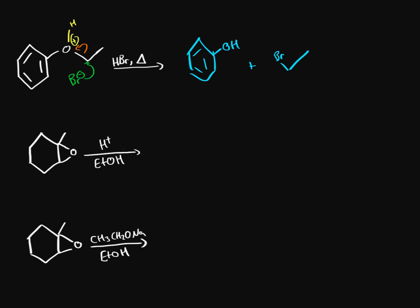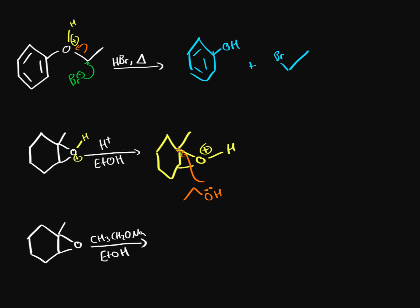Now, for the epoxide with acid, just as the ether oxygen was attracted to the proton, the same scenario applies here — we get a positive charge on the oxygen. With ethanol as the nucleophile, the question is whether it attacks this carbon or the other one. Ethanol is a weak nucleophile, so it's going to attack the more substituted carbon — it's easier for it. The ethanol attacks from the opposite side of where the oxygen is, and this group goes back to the oxygen, so the oxygen no longer has a net positive charge.